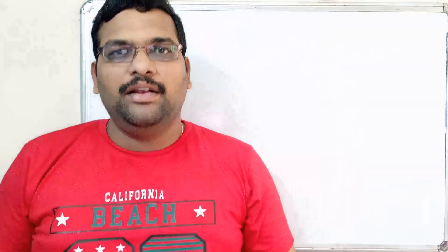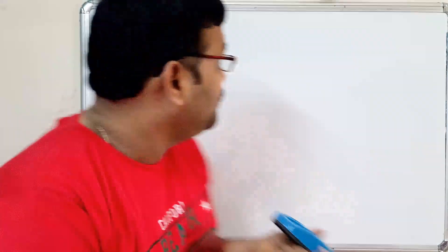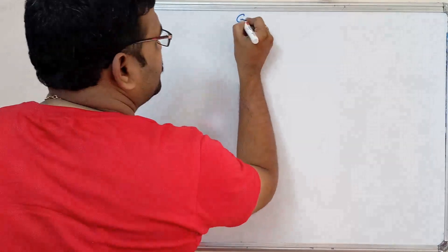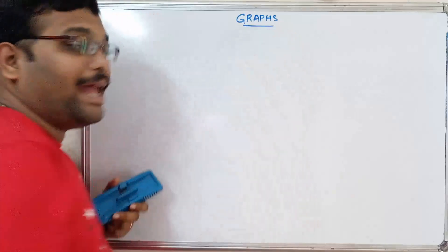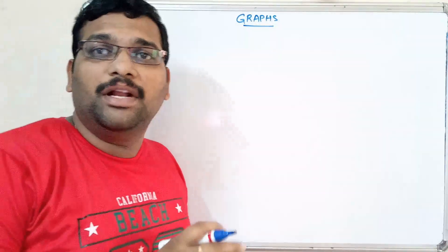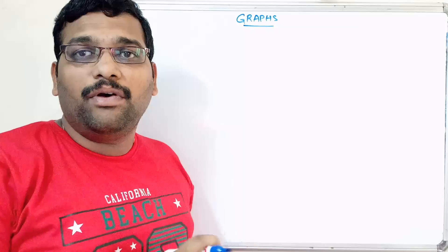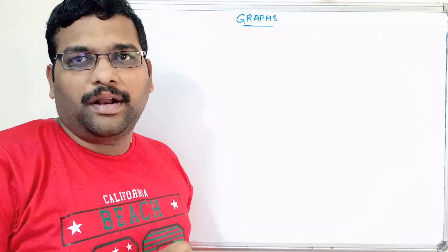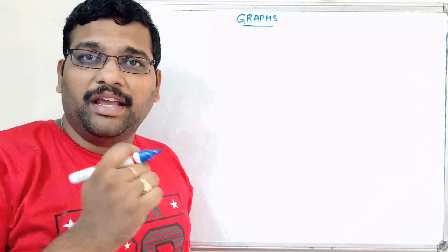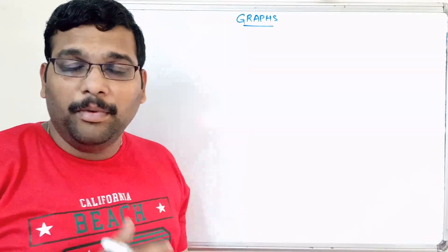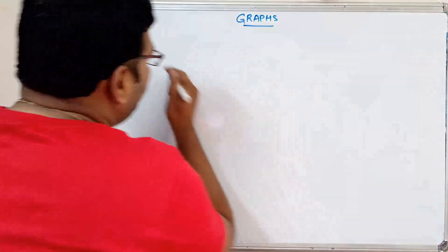Hello friends, welcome back to our channel. In the previous session we completed the trees concept, and from today's session we'll go with another concept called graphs. Graphs in a data structure are similar to a tree, but here we can have a closed loop, whereas in a tree we can't have a closed loop.